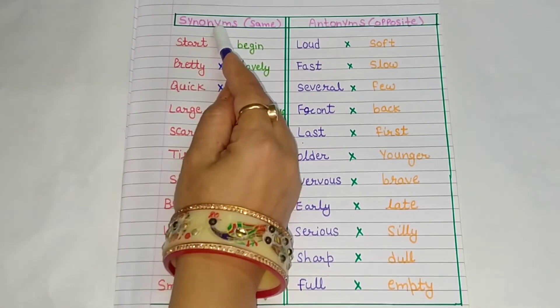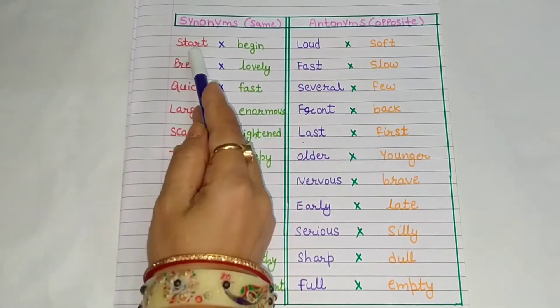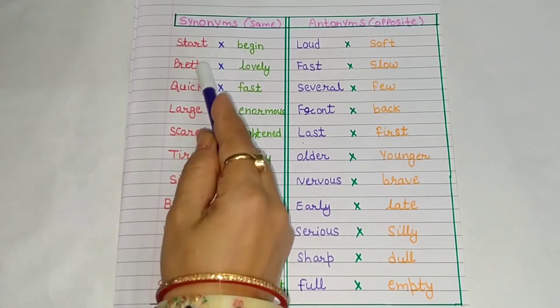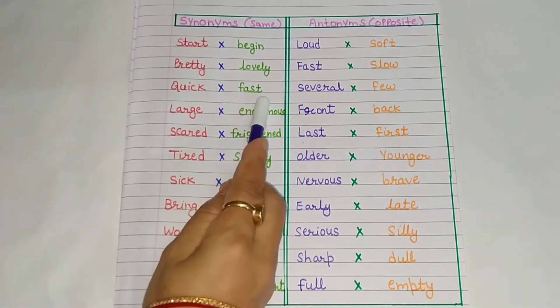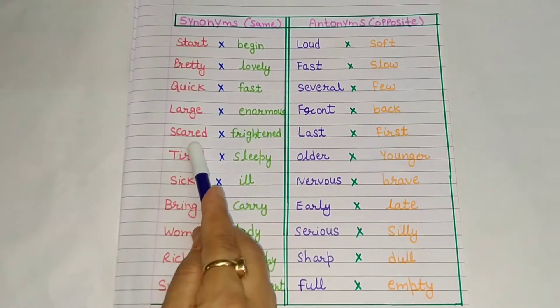Synonyms होता है same, जो same word बताते हैं. जैसे start, beginning दोनों का same word है. Pretty, lovely. Quick, fast. Large, enormous.